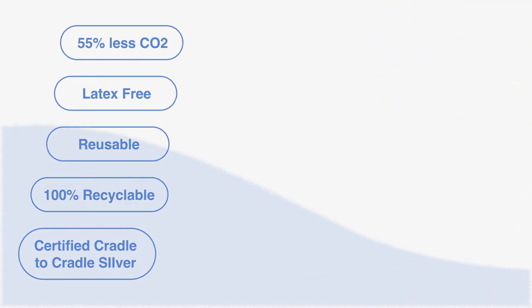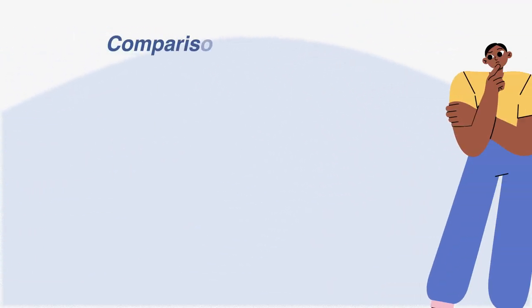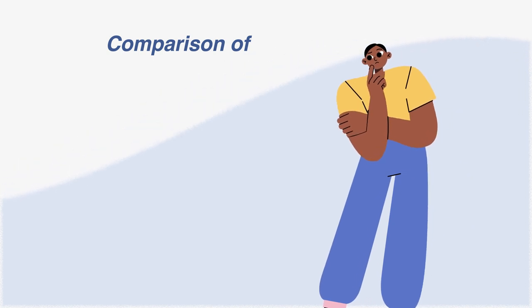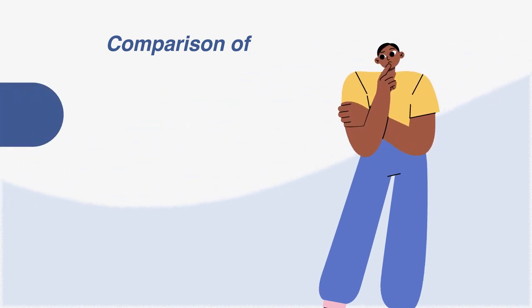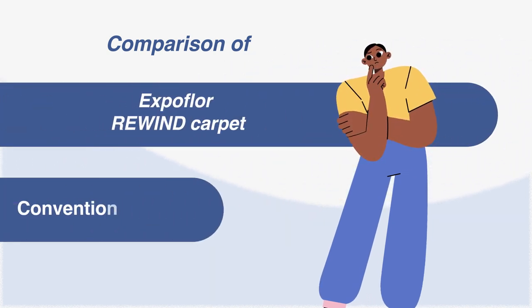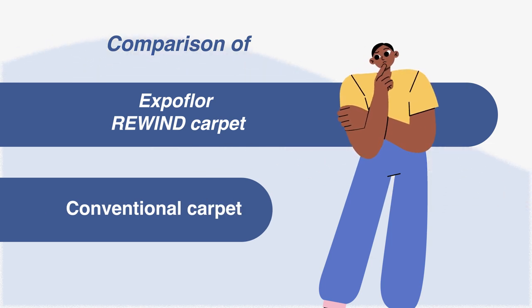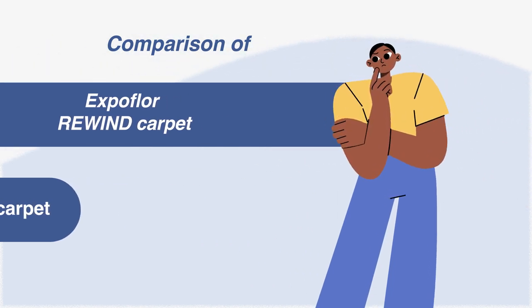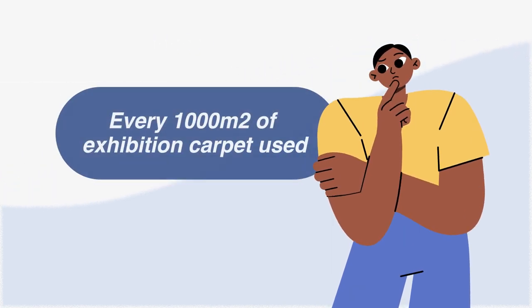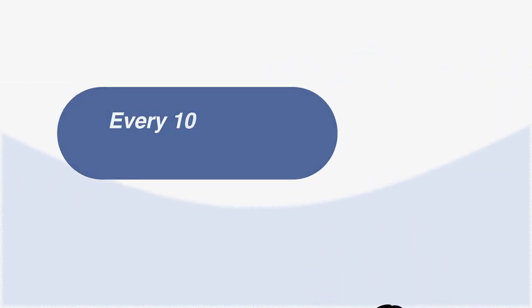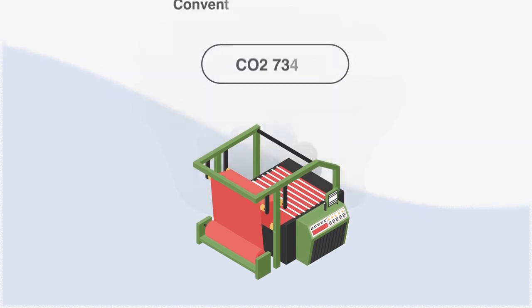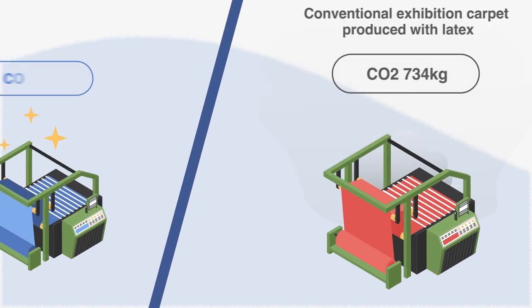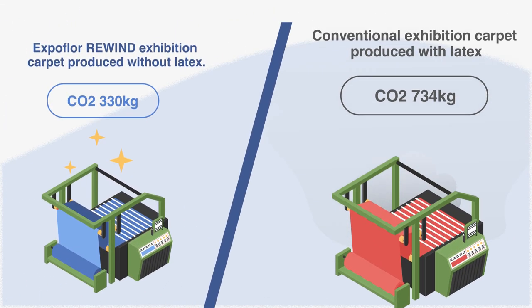Conventional carpet is produced with latex and creates an average CO2 of 734 grams for every square meter. Expo Floor Rewind Carpet is latex-free and is produced with a CO2 of only 330 grams. For every 1,000 square meters of Expo Floor Rewind Carpet use, we save 440 kilograms of CO2. This is equivalent to a goods van traveling 1,700 kilometers.